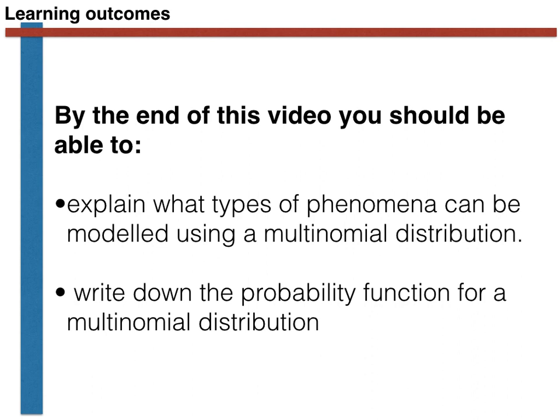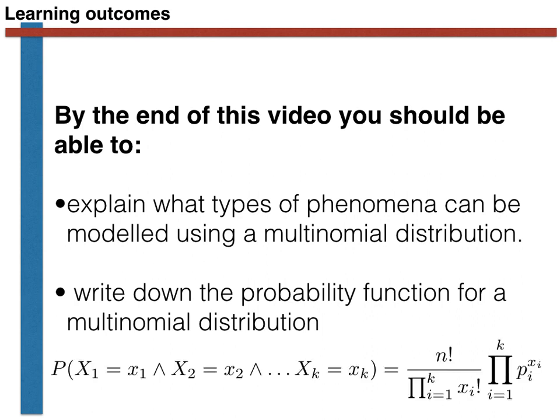To summarise, the multinomial distribution is used to model what happens when we perform multiple trials that each have k possible outcomes. The probability function for a multinomial distribution is as shown here. If you are able to follow all this, well done. If not, watch the video again to better understand the content. Thanks for your attention.